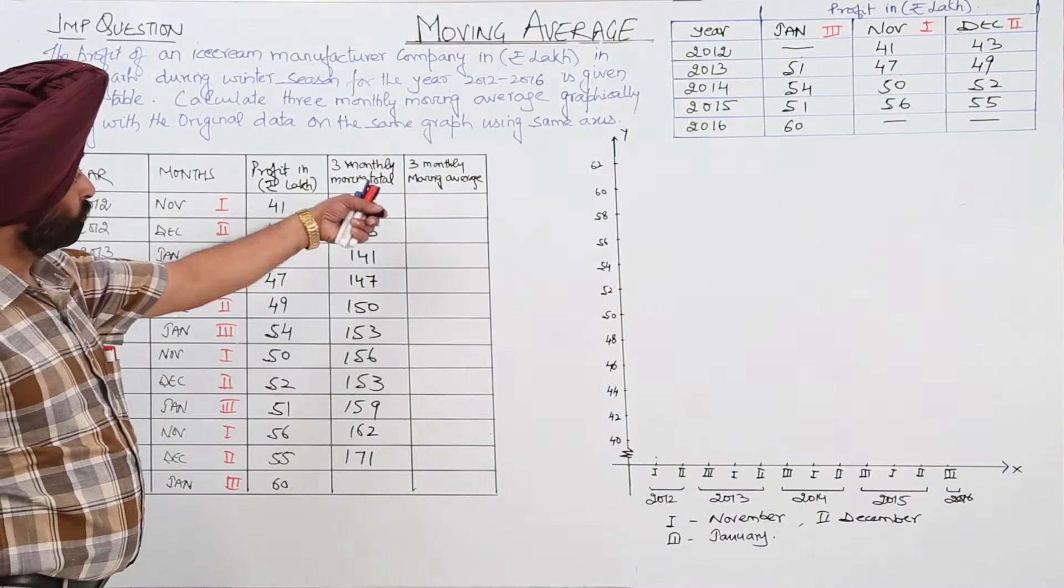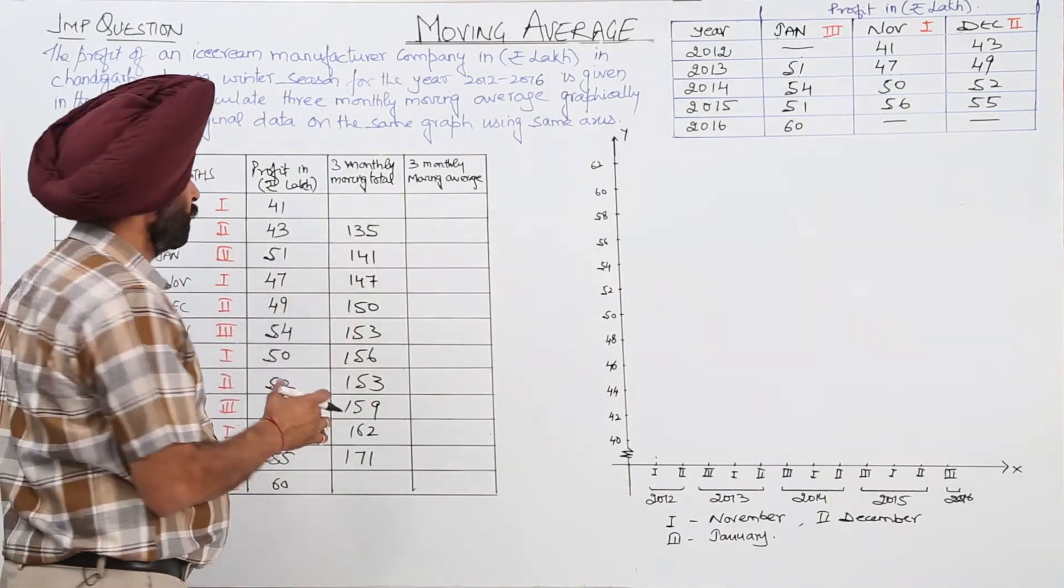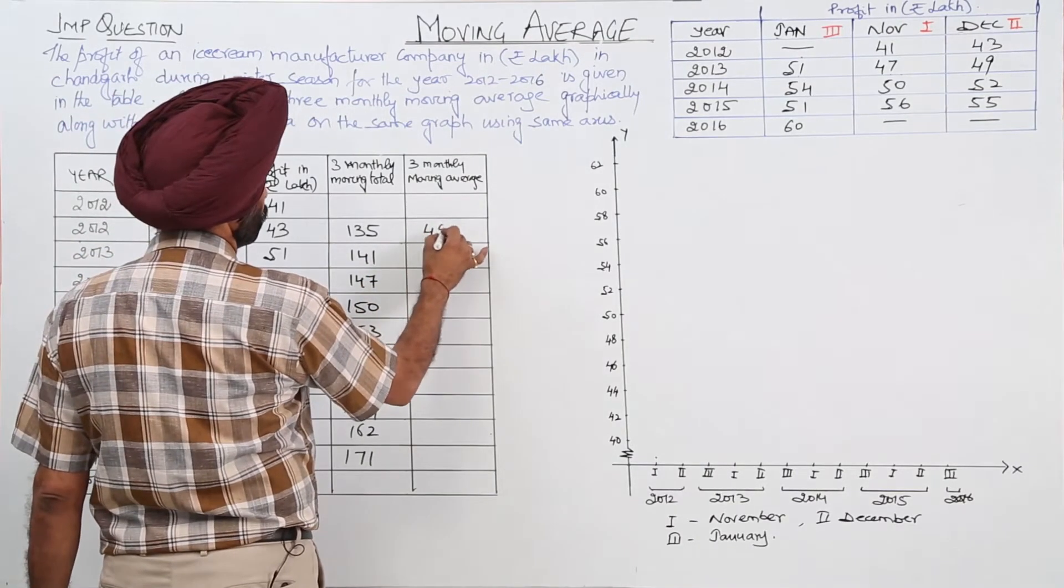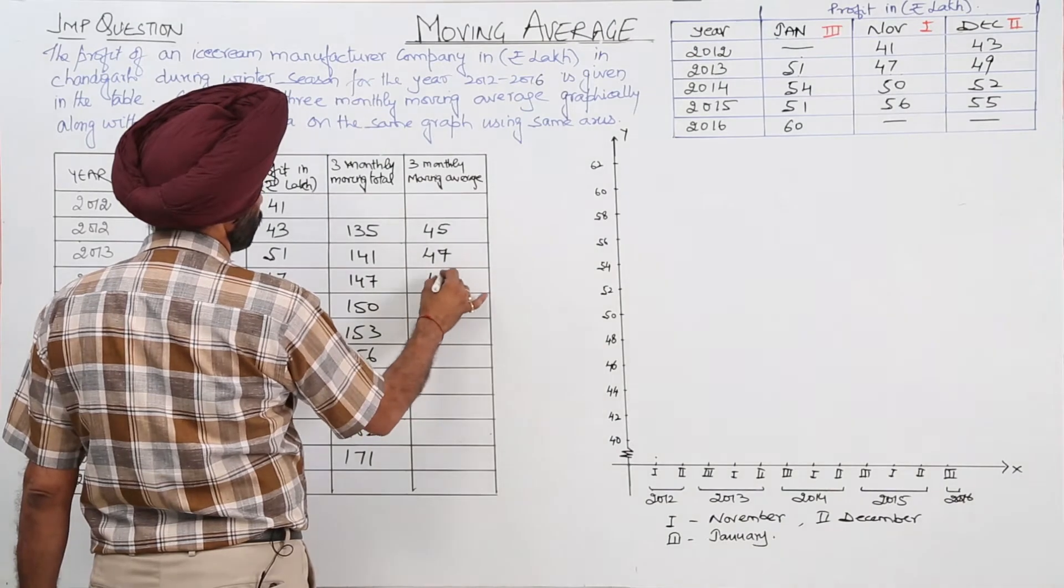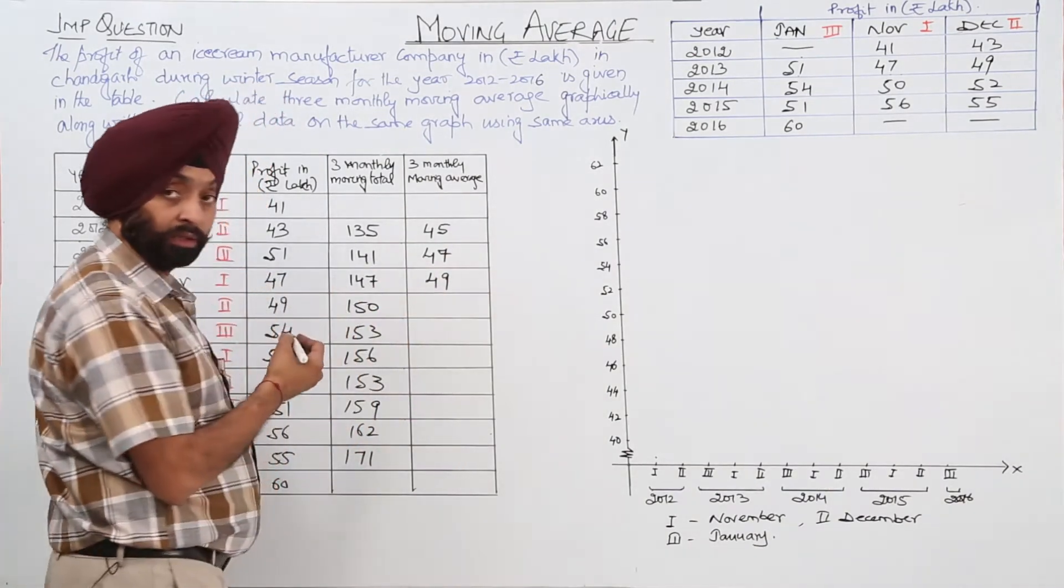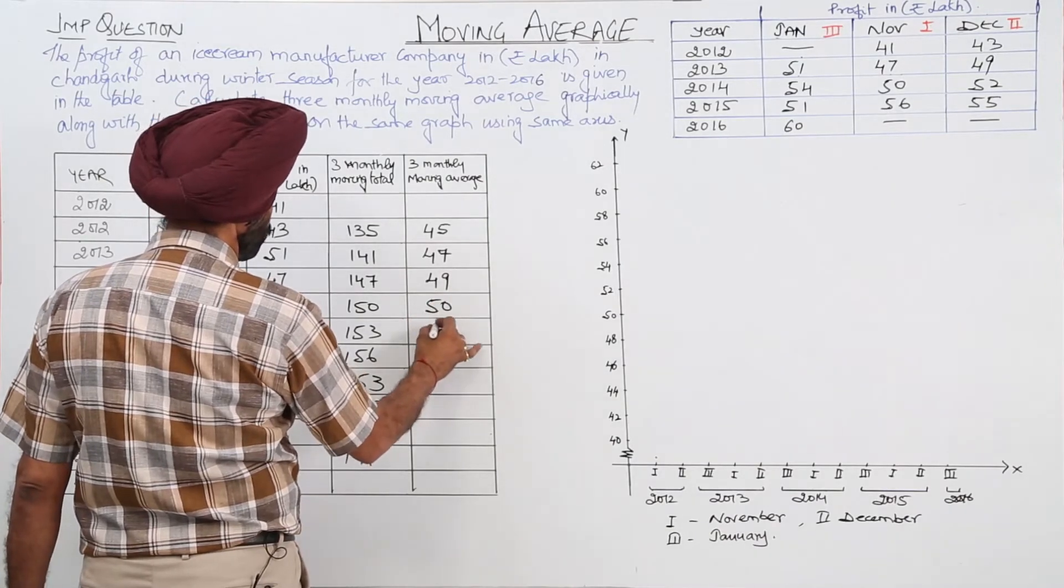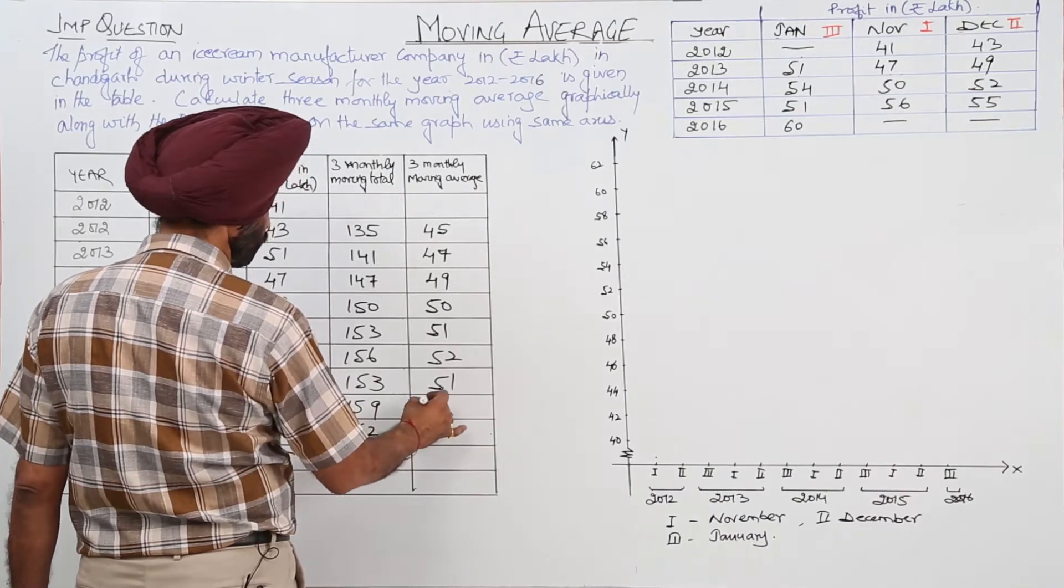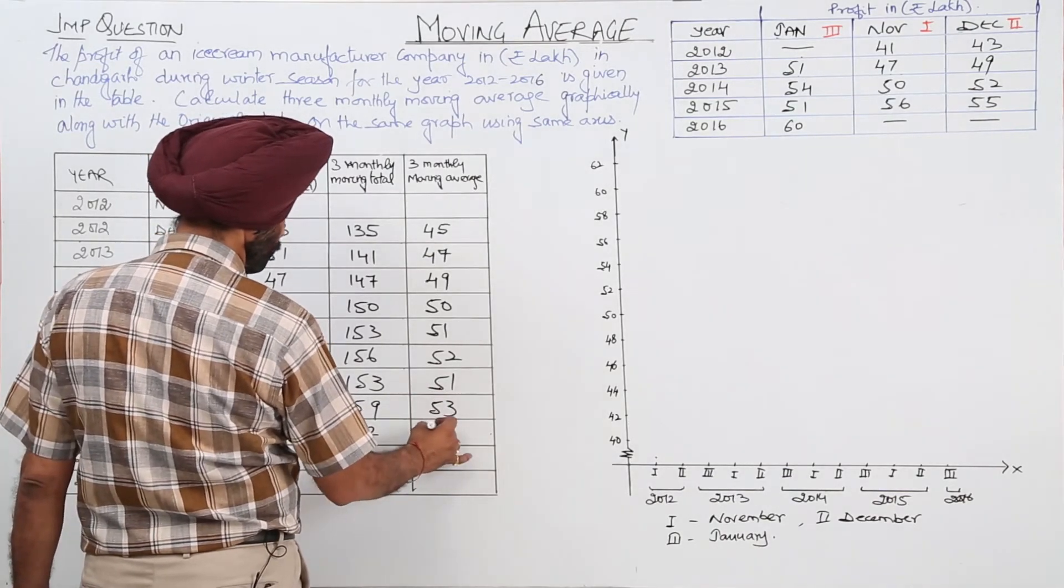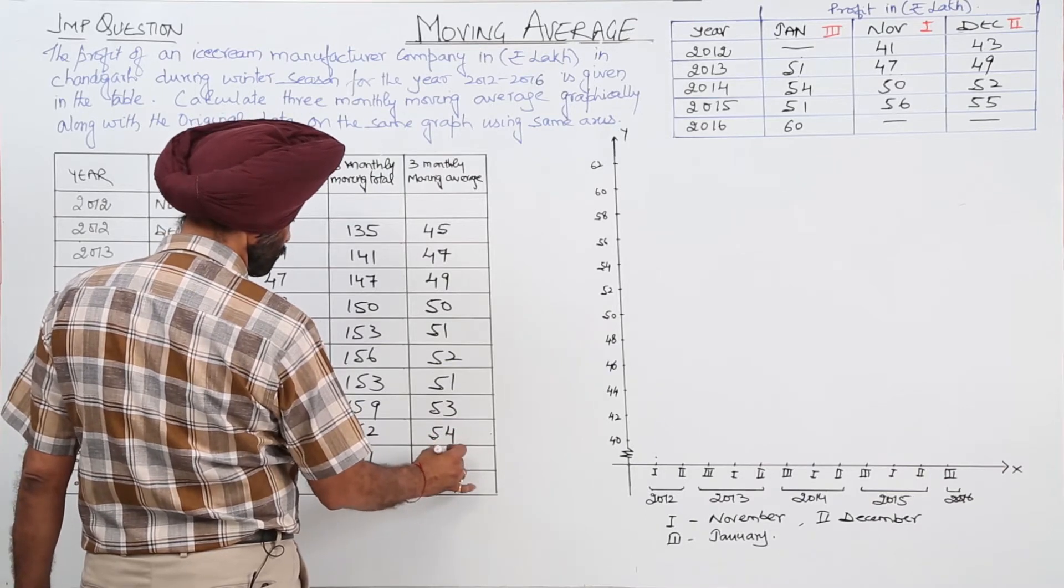Now, moving average. It means we have to divide 135 by 3. So we are having 45, 47, 49, dividing by 3. Then 50, 51, 52, again 51, 53, 54, and 57.